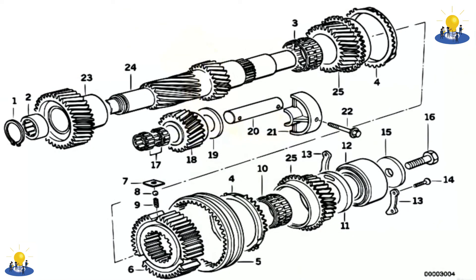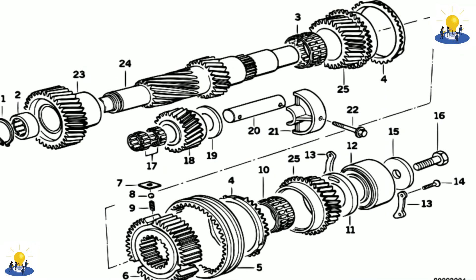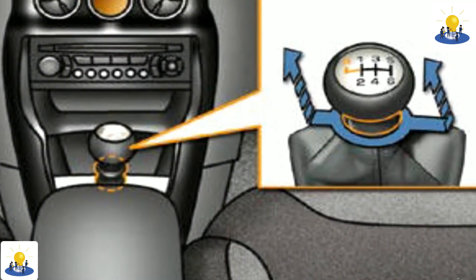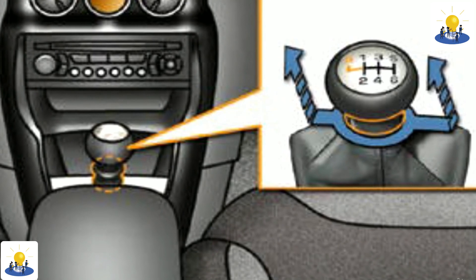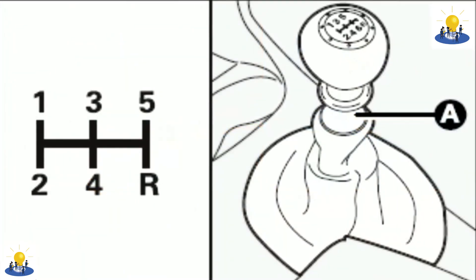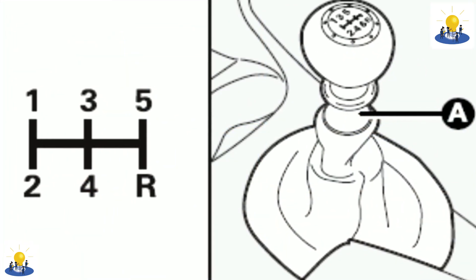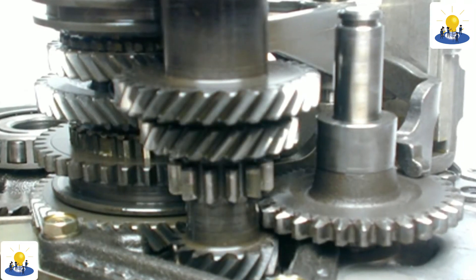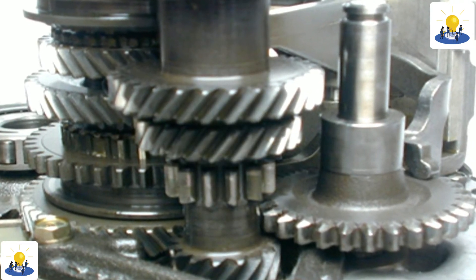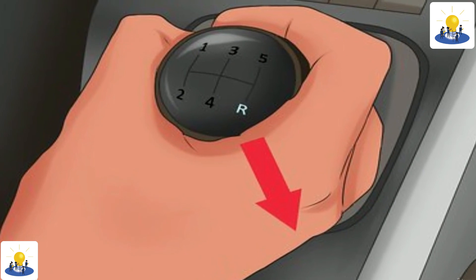Most transmissions include a lockout mechanism to prevent reverse gear from being accidentally selected while the car is moving forwards. This can take the form of a collar underneath the gear knob which needs to be lifted, or requiring extra force to push the gearshift lever into the plane of reverse gear.